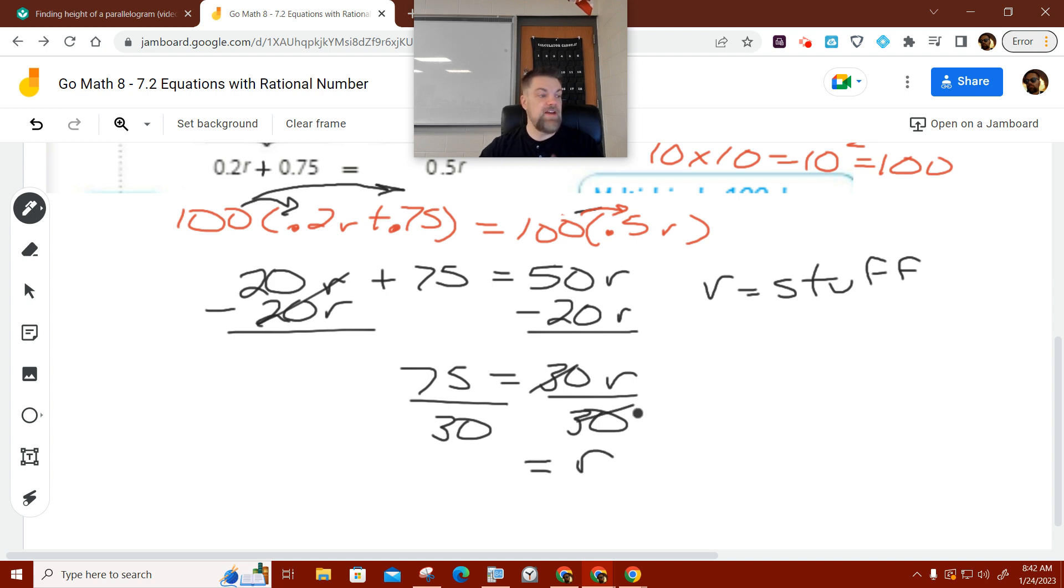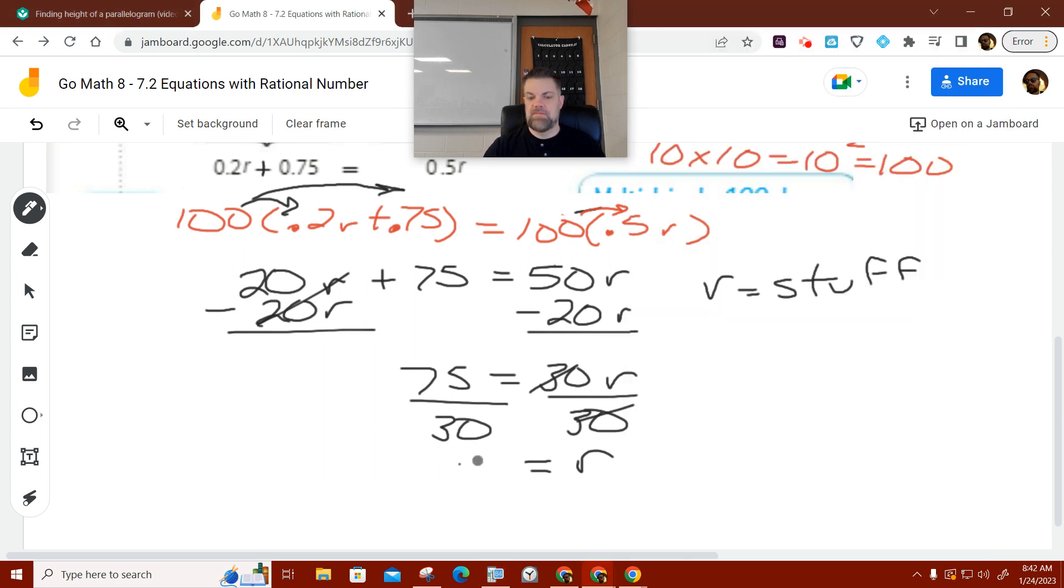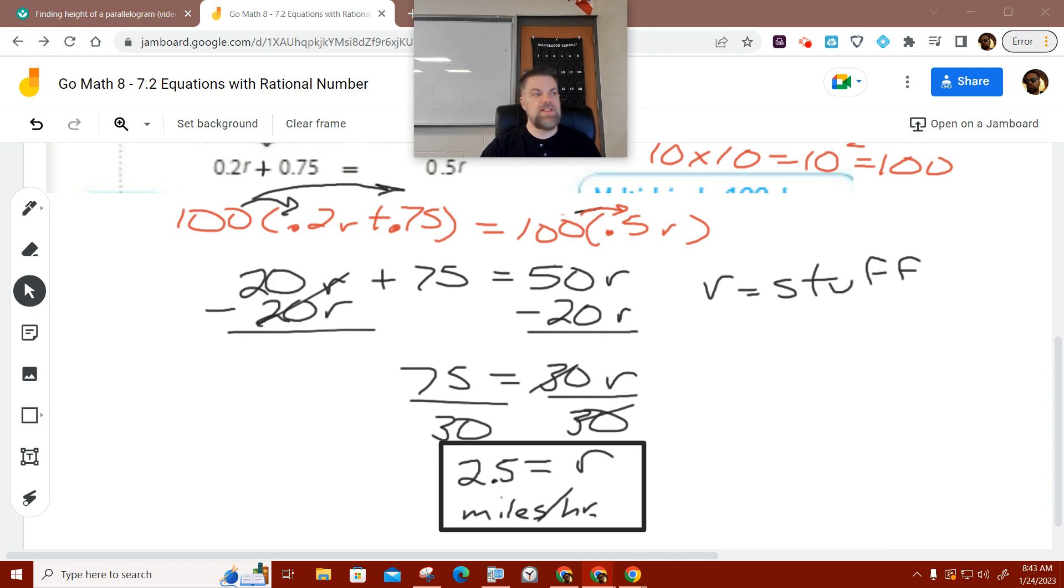You're still going to get a decimal answer. I think it's 2.5. Let's see. 75 divided by 30. Yep. 2.5. So they were walking 2.5 miles per hour. Okay. And that's it. Are there any questions on that one?